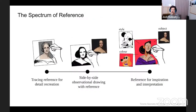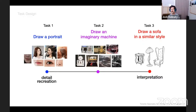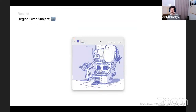From our interviews, we developed the concept of the spectrum of reference, which reveals the potential placement of reference material in relationship to the artist's intent. On the far left, the goal is strictly detail recreation, like tracing, and reference material will likely be on the canvas. As you move further along the spectrum, detail recreation becomes less important and reference might be used for more interpretive reasons, with imagery located further from the canvas. Using this spectrum, we designed a set of drawing tasks to ensure reference in our tool could be used in a variety of ways. We asked artists to draw a portrait, an imaginary fictional machine, and a sofa in the style of provided images. We recruited 13 artists to complete these tasks, and all were provided with the same set of reference images.